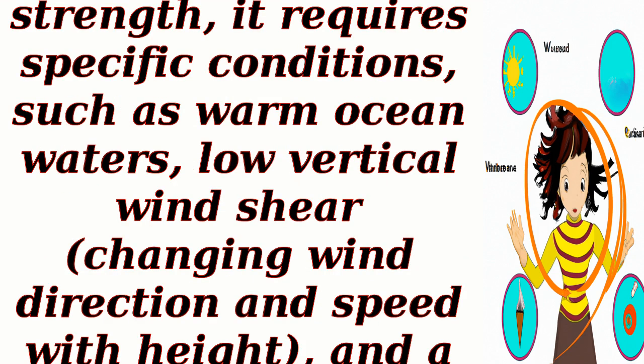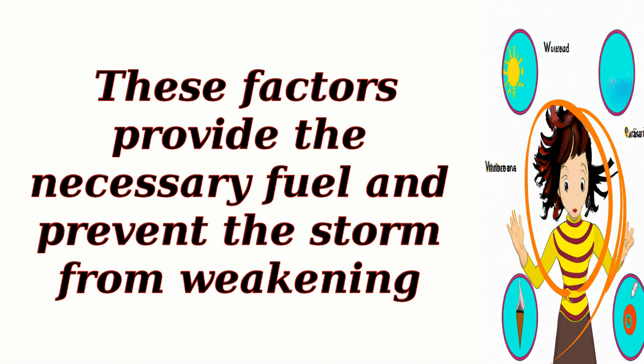Sustaining factors: for a hurricane to maintain its strength, it requires specific conditions, such as warm ocean waters, low vertical wind shear, changing wind direction and speed with height, and a high level of moisture in the atmosphere. These factors provide the necessary fuel and prevent the storm from weakening.